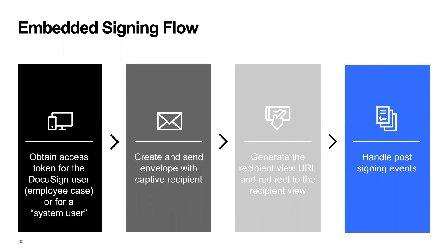There are four steps. The first is you need an access token for the DocuSign user or for a system user. You need an access token in order to work with the DocuSign API. Then you create and send an envelope that has one or more captive recipients — your envelope can have some that are captive and some that are not. When you're ready to generate the signing ceremony, which we call the recipient view, you redirect the user's browser to that signing ceremony. Finally, you will typically handle the post-signing events, which is where your application finds out what actually happened.